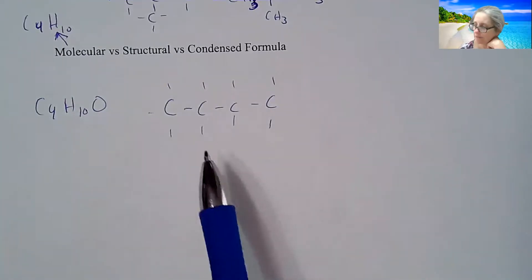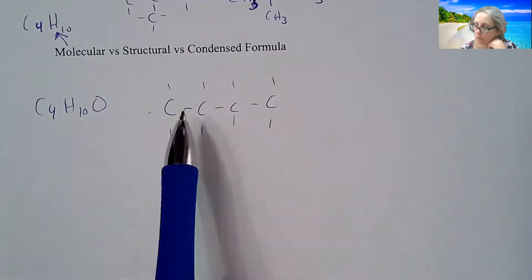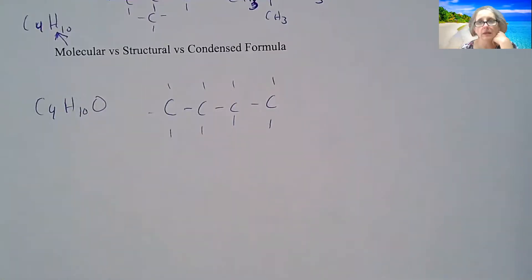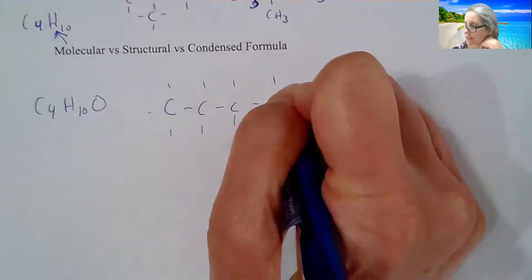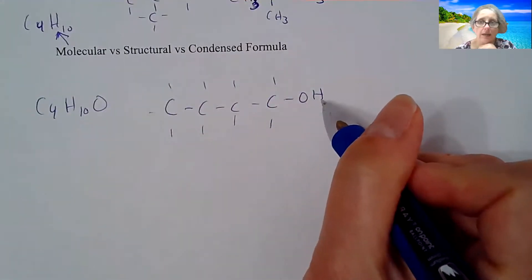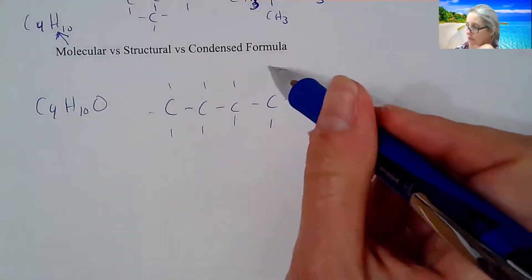So if we go down to this example, this is kind of where we're going to go with all of this when we get into more of the functional groups. So C4H10O, if I have four carbons, I need to find what is that oxygen going to be? Is it going to be an ether? Is it going to be an aldehyde? Is it going to be an alcohol?